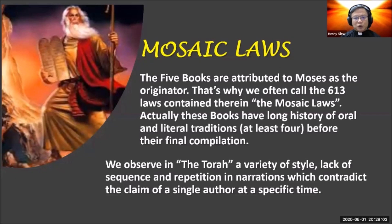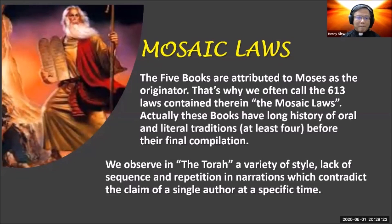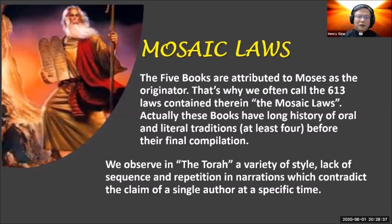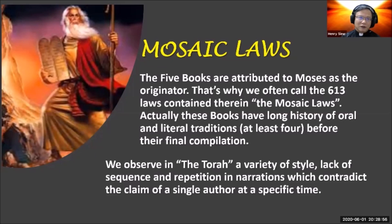We observe in the Torah a variety of styles of writing and a lack of sequence — not very orderly, jumpy from topic to topic, and at times repetitions in narrations. All these are indicators that counter the claim that it was one single author who wrote the five books at one specific time. People say it was Moses, but that could not be, because the whole writing took hundreds of years for the eventual compilation.